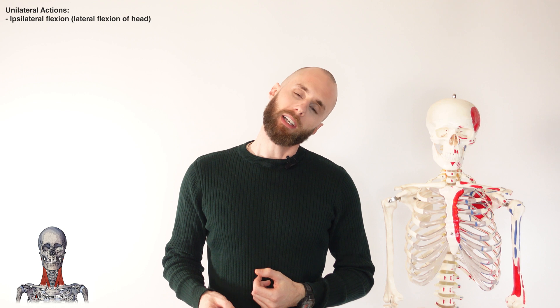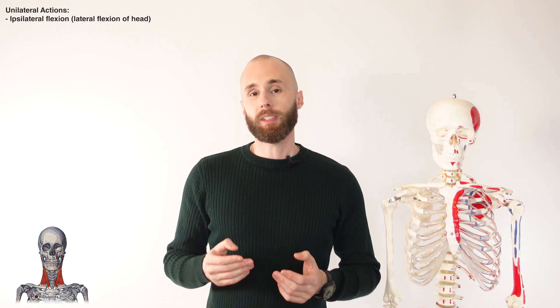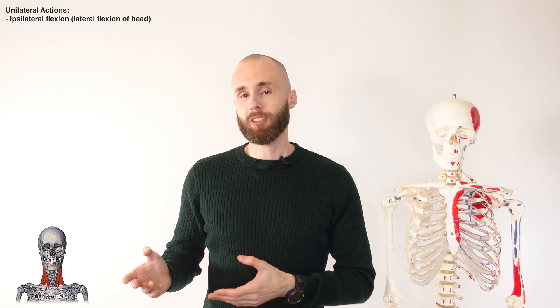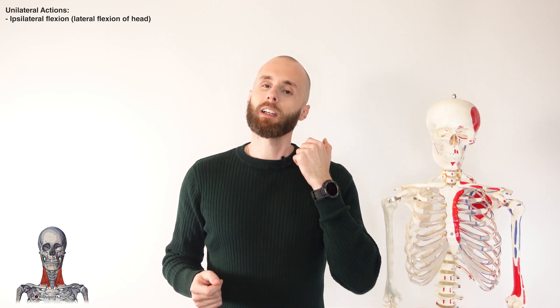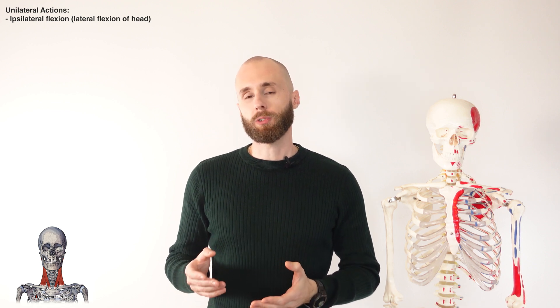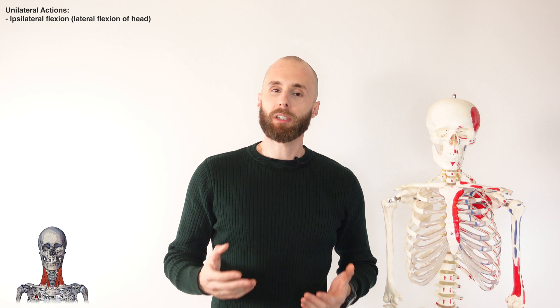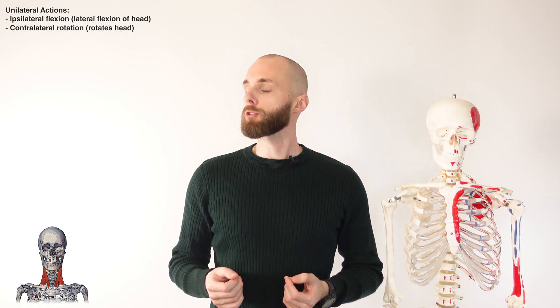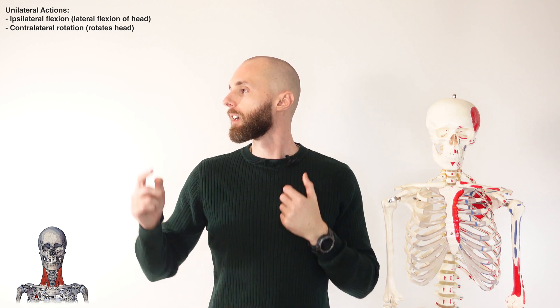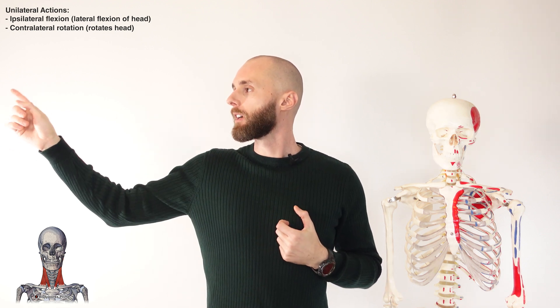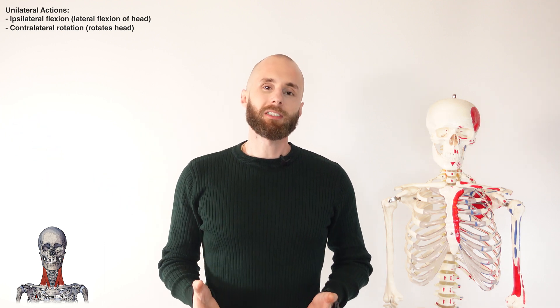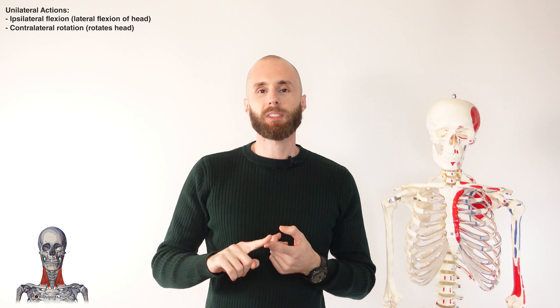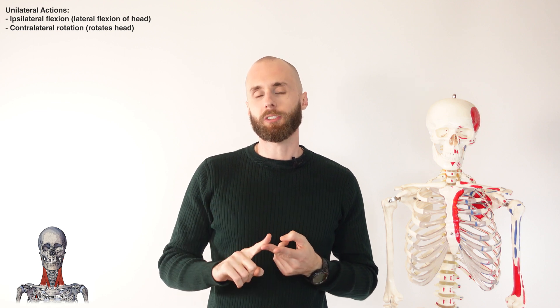Our first unilateral action is lateral flexion of the neck — tilting the head to the side. The proper name for that is ipsilateral flexion, because the left side is contracting and the head tilts to the same side. The opposite, contralateral rotation, is our next action — the left side contracts but the head goes to the opposite right side. So our two unilateral actions are ipsilateral flexion and contralateral rotation.